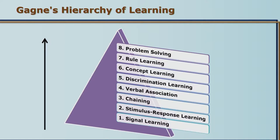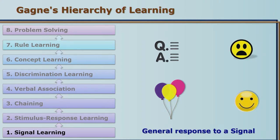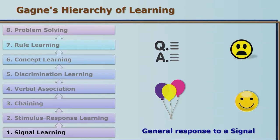First of all let us see what is signal learning. Here we do not make any efforts to give our response — these are all reflex actions. When we see balloons we are happy. When we see some place which has given us pleasant experiences we are very happy. Wherever we have got unpleasant experiences we dislike those places. When a child hears a loud sound the child is frightened; when a child sees a teddy bear it is very happy. These are autonomous responses, reflex actions. The autonomous nervous system is responsible for this kind of learning, and this is therefore called the lowest type of learning. So all our likes, dislikes, anxieties, fears, superstitions — they are all because of signal learning.